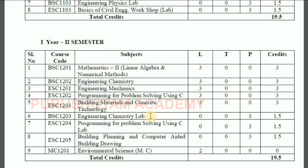The labs in the second semester include Engineering Chemistry Lab, Programming for Problem-Solving Using C Lab, and Building Planning and Computer-Aided Building Drawing Lab — each with Practical 3 and Credits 1.5. The second semester also has Environmental Science as an additional subject.